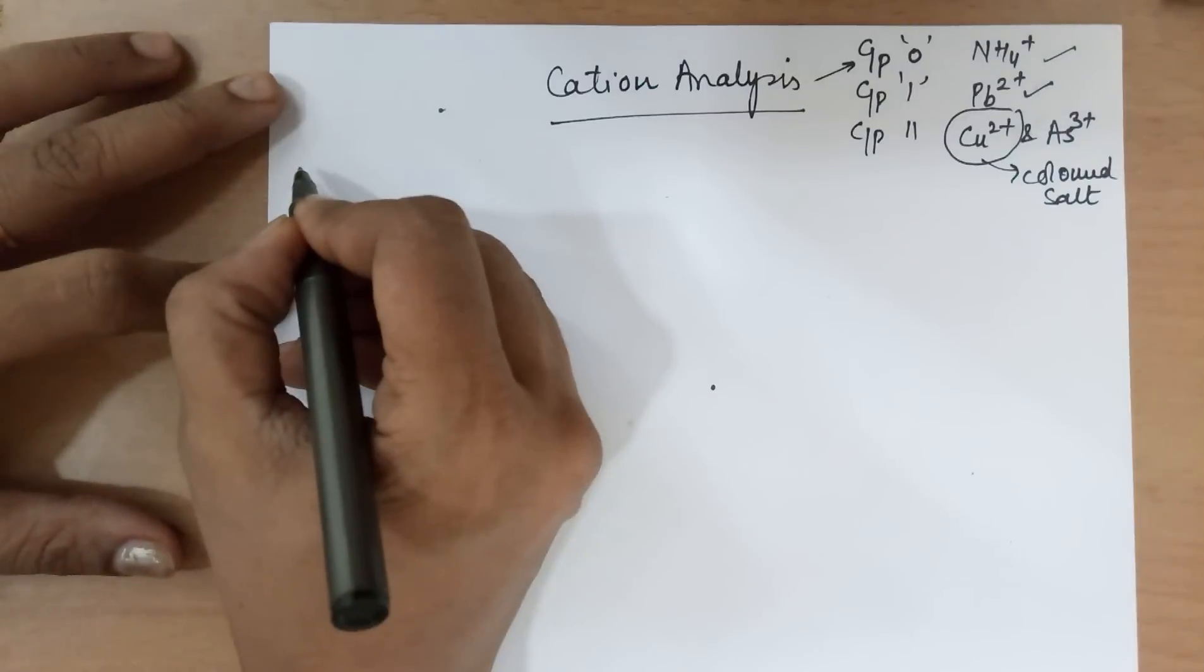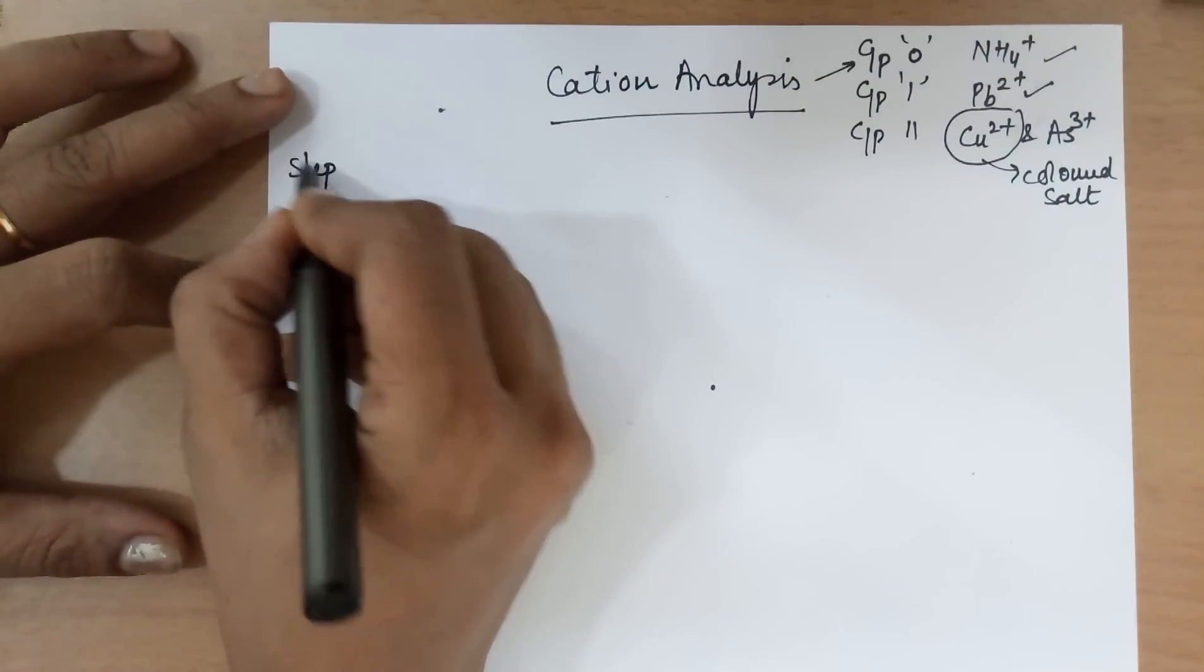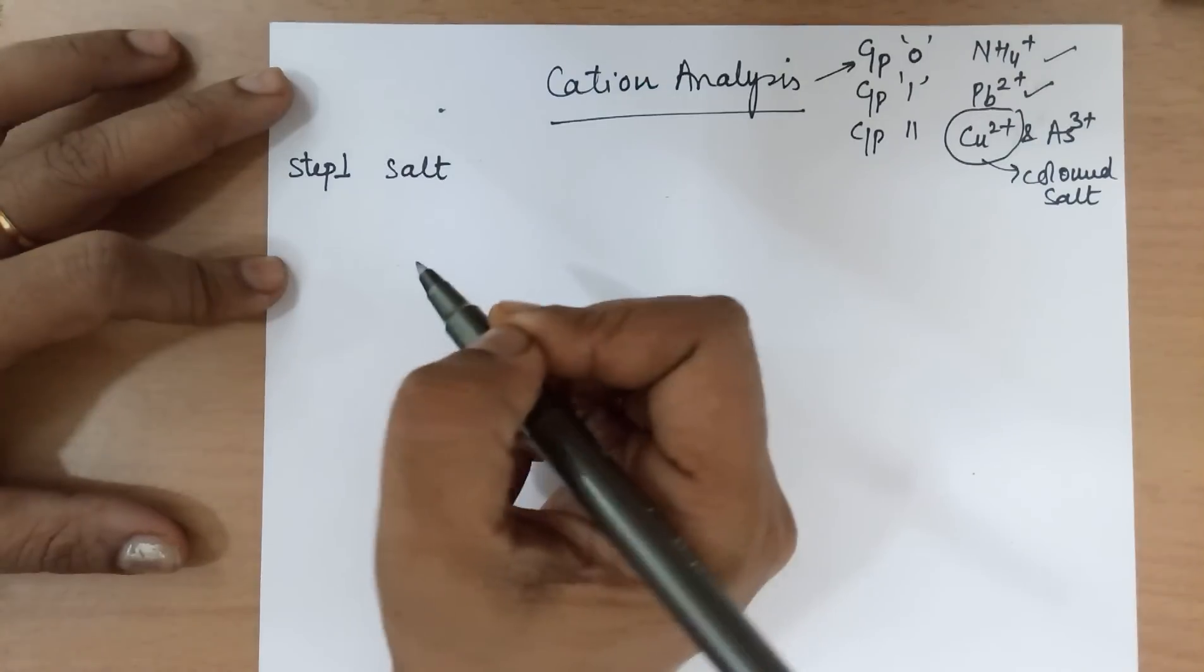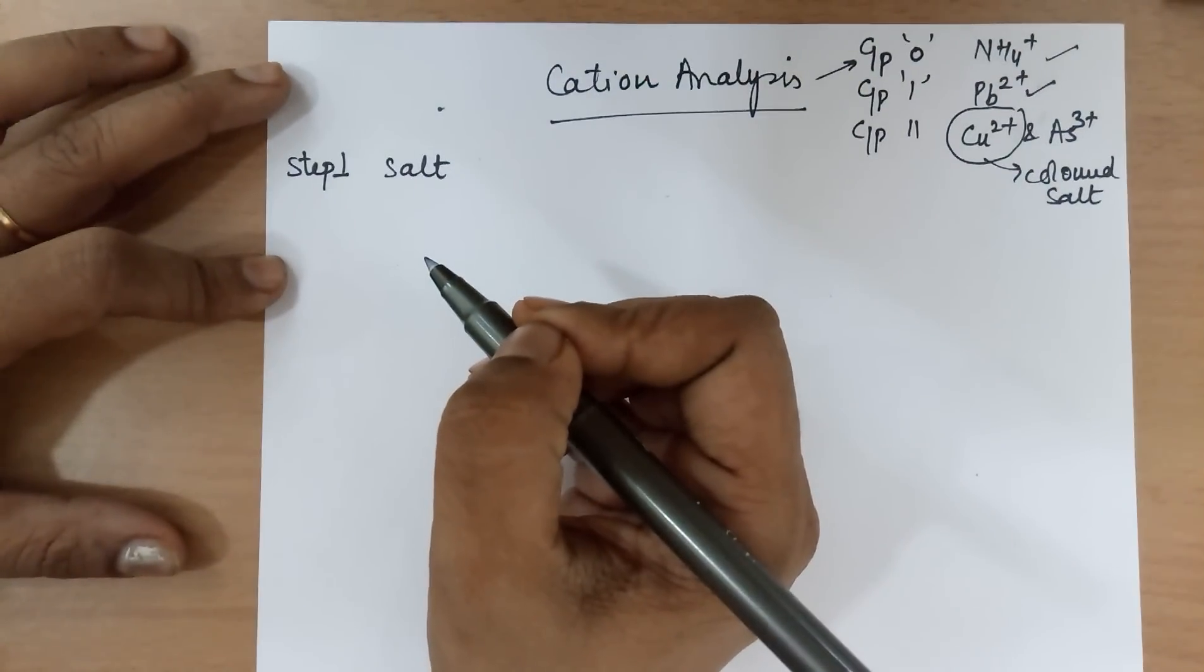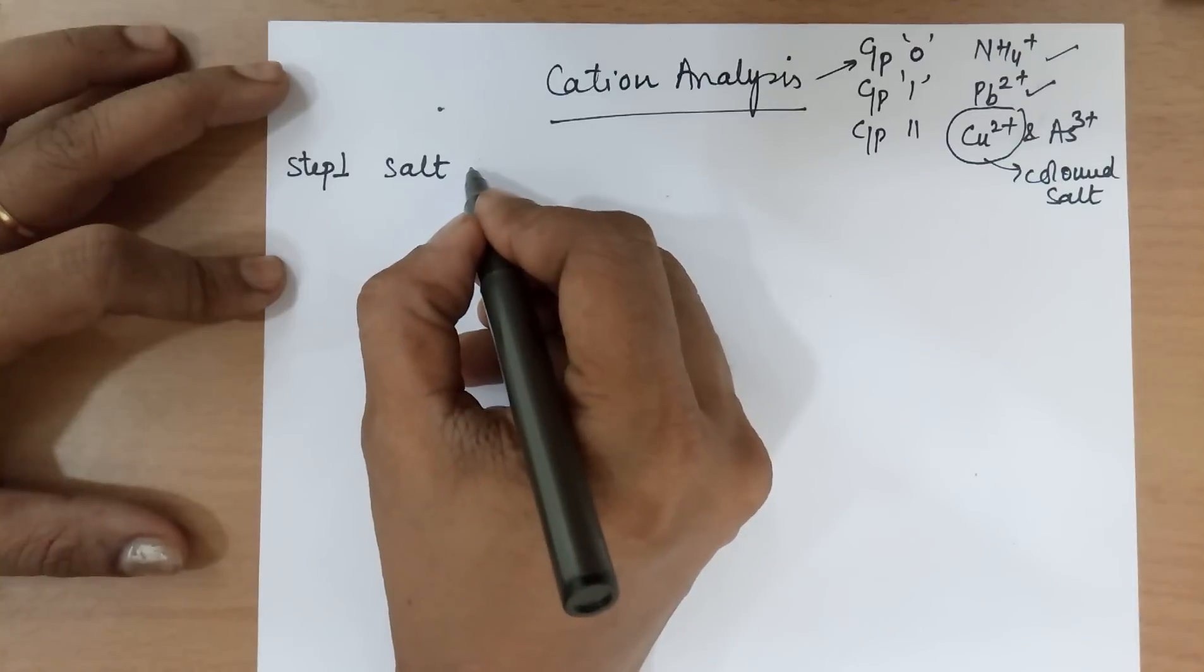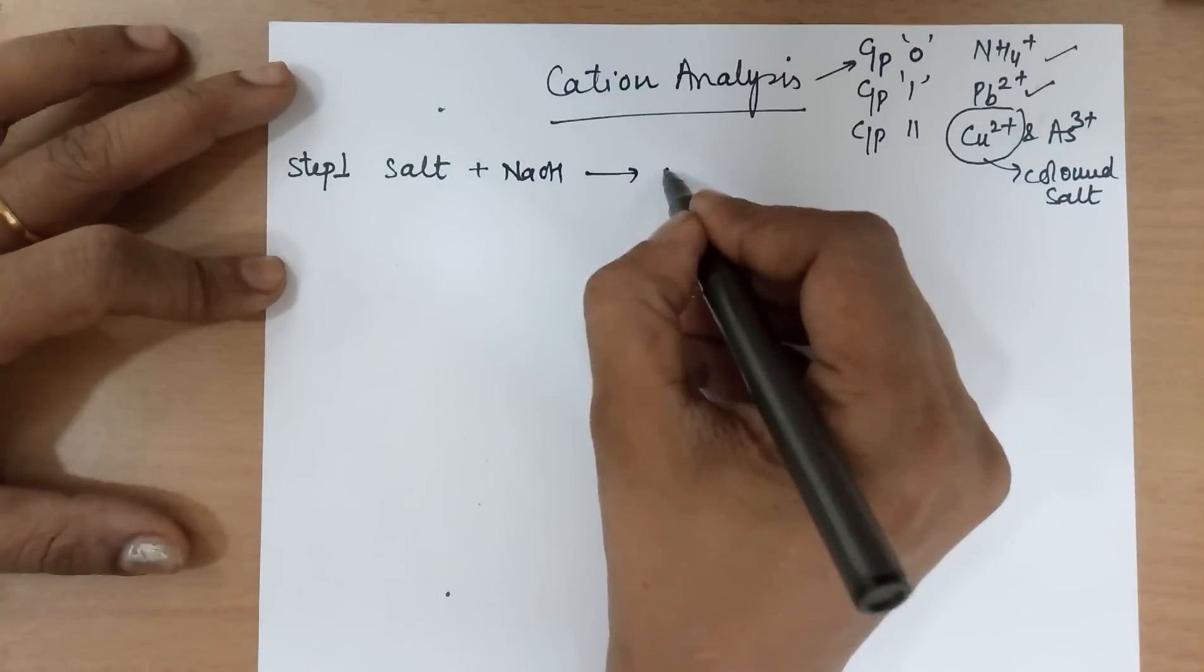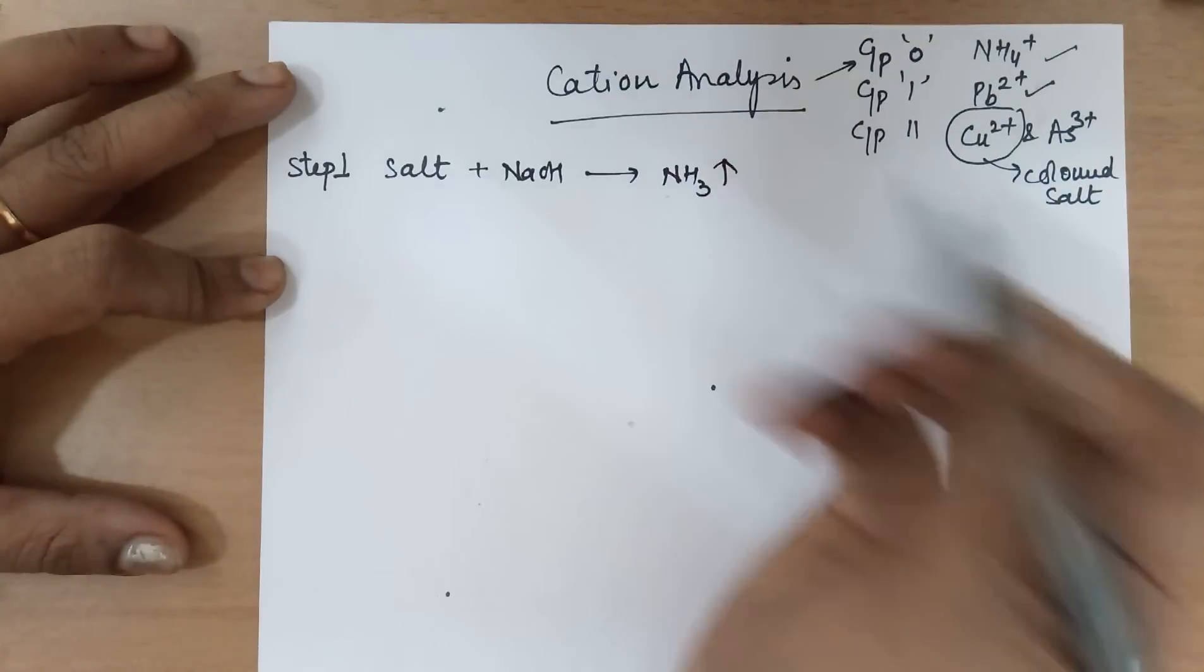We always begin with steps. The first step to salt analysis is, you take the salt—mind you, it's the salt, not the solution. To the salt, a pinch of it, add NaOH. And you can smell ammonia gas.